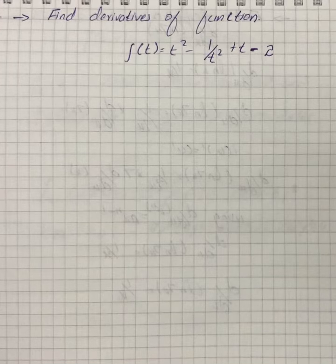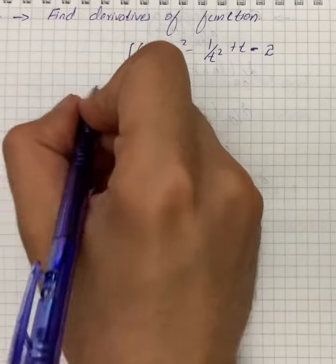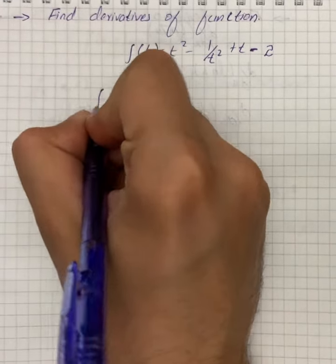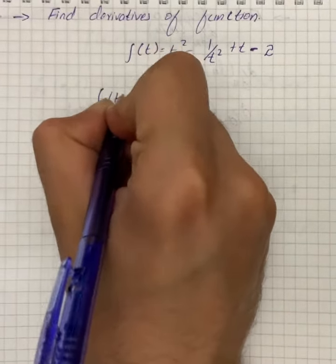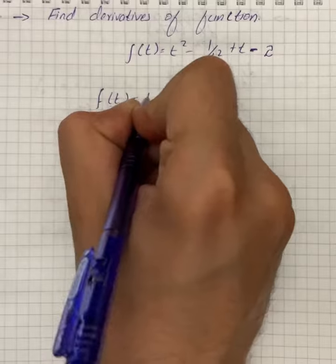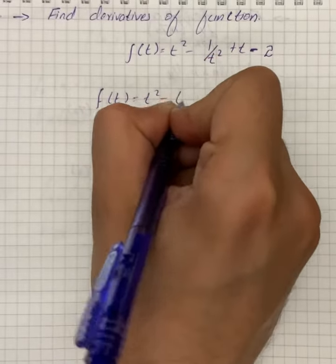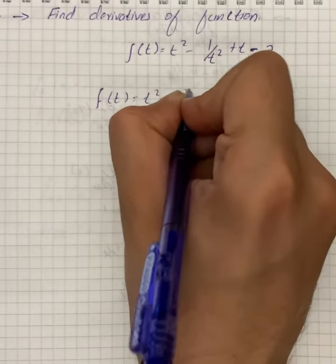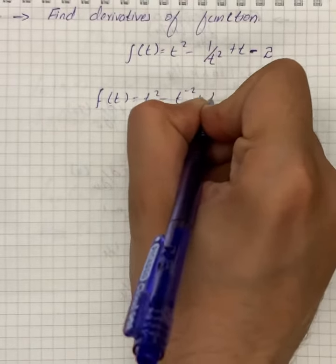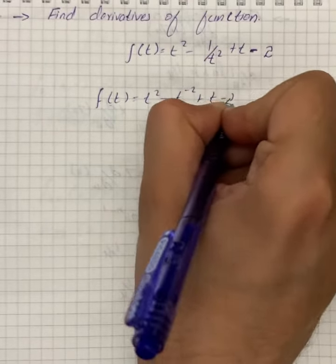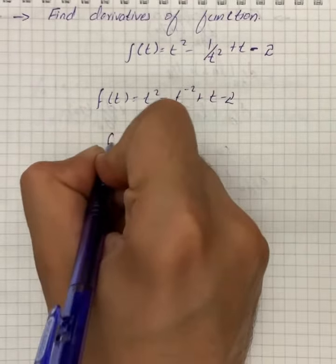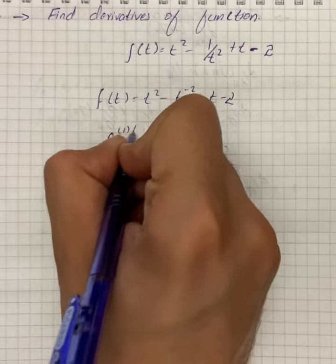Here we have to find the derivatives. We can write f(t) is equal to t squared minus t raised to the power minus 2 plus t minus 2.